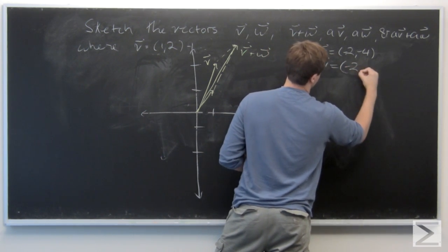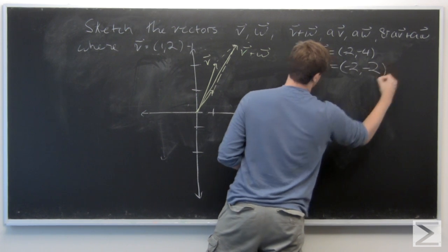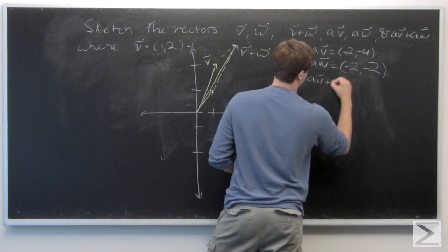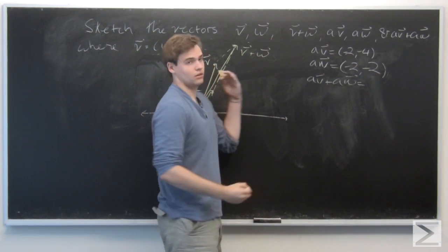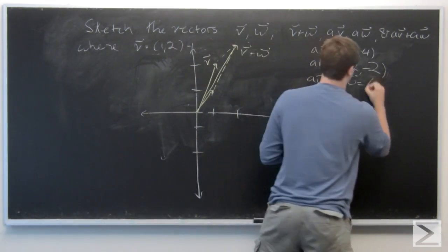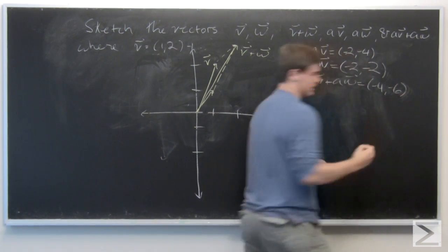This is going to be (-2,-2). And then a·v plus a·w is going to be (-4,-6).